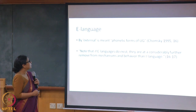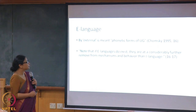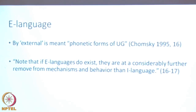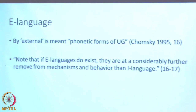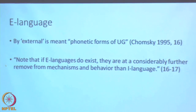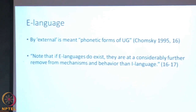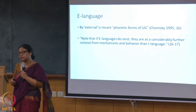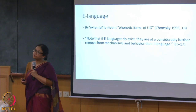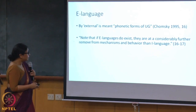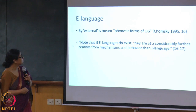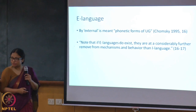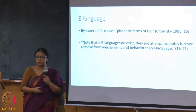In contrast to I language, we have E language — the external language — which has morphophonological form that can be used for communication. Chomsky says these are the phonetic forms of universal grammar, ready to use. He maintains a clear distinction: I language and E language are different levels of representation. He notes that E languages, if they exist, are at a considerably further remove from the mechanisms and behavior of I language, which is why Chomsky is skeptical about giving a systematic analysis to E language used for communication.